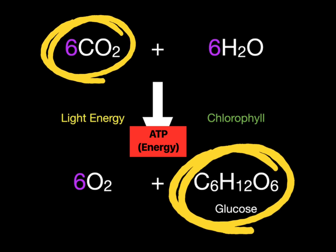Ultimately, the ATP or energy is needed to produce carbohydrates such as glucose and other carbon compounds from carbon dioxide. The details of this are not necessary at standard level, but they are at higher level.